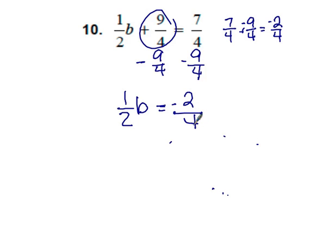Okay, and to isolate B, we have to multiply by the reciprocal on both sides. That leaves us with B equals negative 4 over 4, which equals negative 1. And we want to check our work.